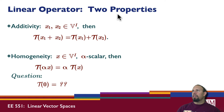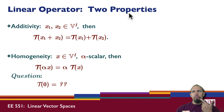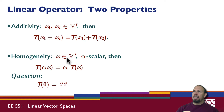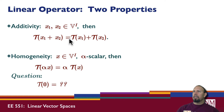In terms of the linear operator, the defining property can be broken up into two separate properties: the additivity property and the homogeneity property. The additivity property says that if I have two vectors in the vector space and I operate on their sum, I get the sum of the operations on the individual vectors. Homogeneity says that if I multiply a vector in the input space by a scalar and take the operation on that, I get the scalar times the operation on the individual x.